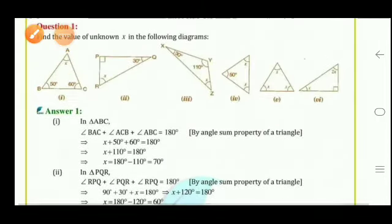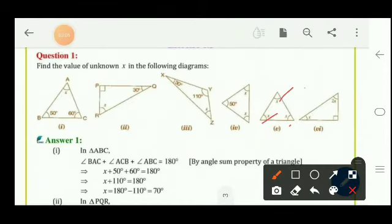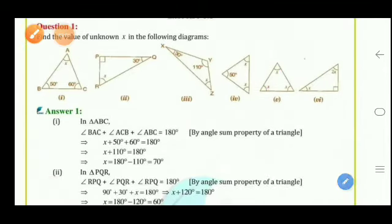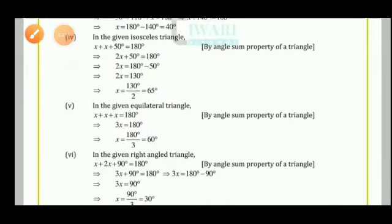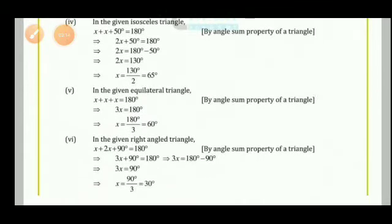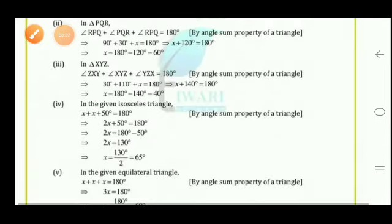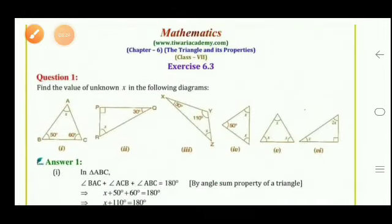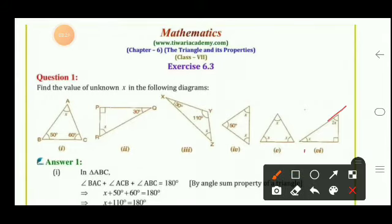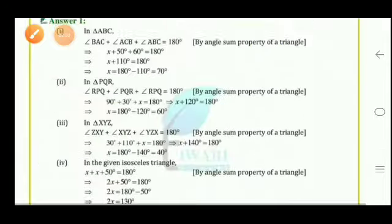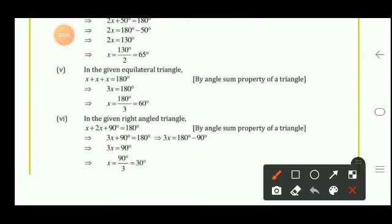Question 2 of Exercise 6.3: find the values of unknown x and y. Part 1 — using exterior angle property: x + 50 = 120, so x = 70°. Then using angle sum property: x + y + 50 = 180, so 50 + 70 + y = 180, giving y = 60°. Alternatively, we can use the linear pair property.